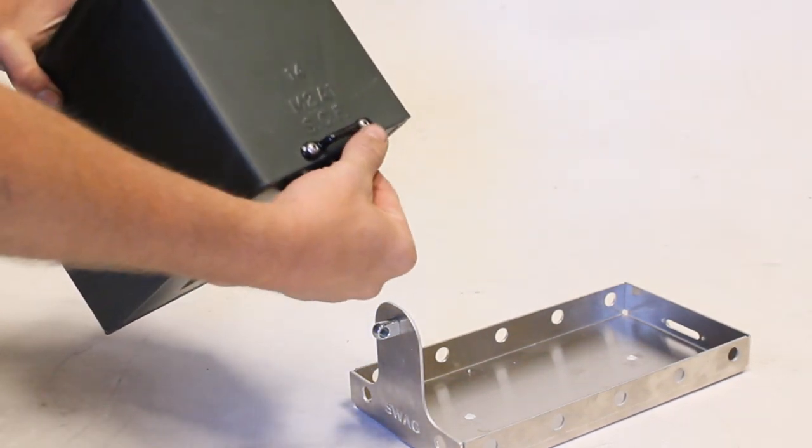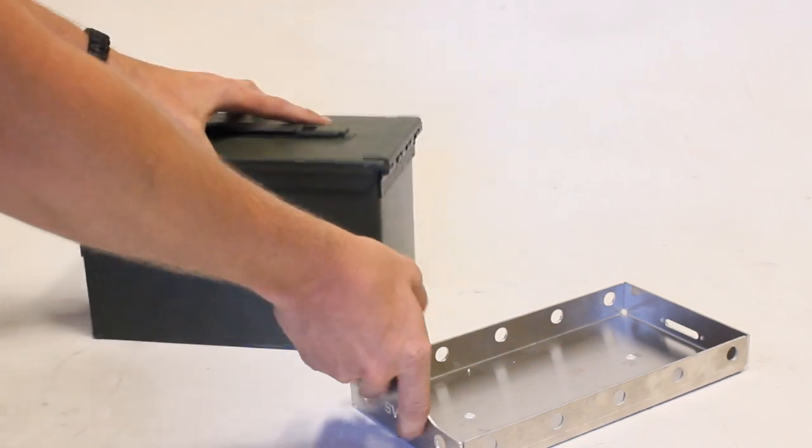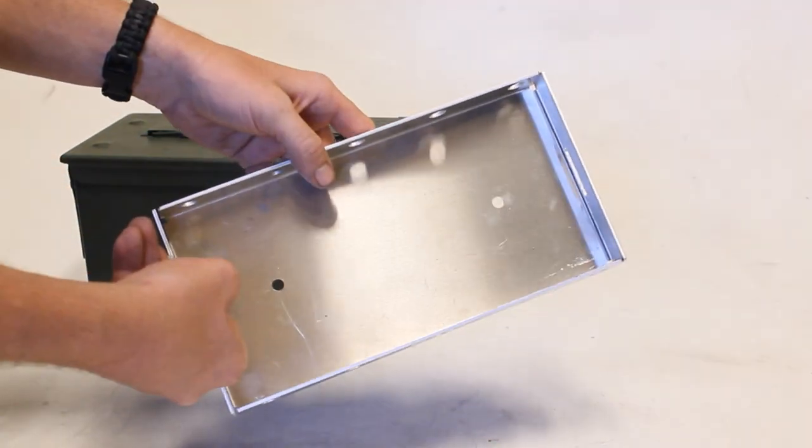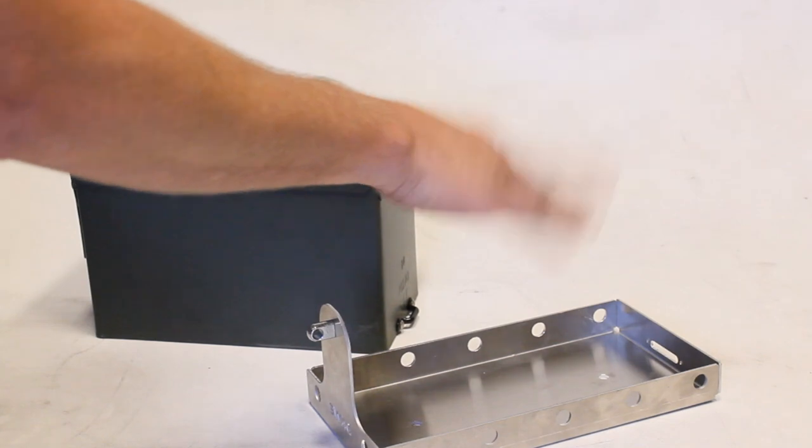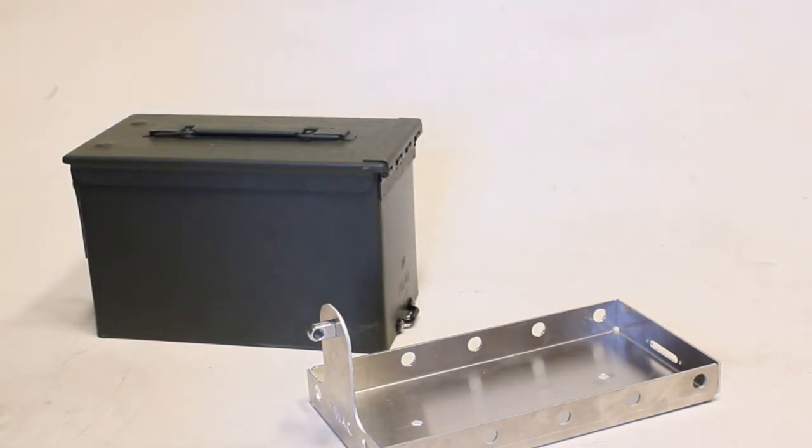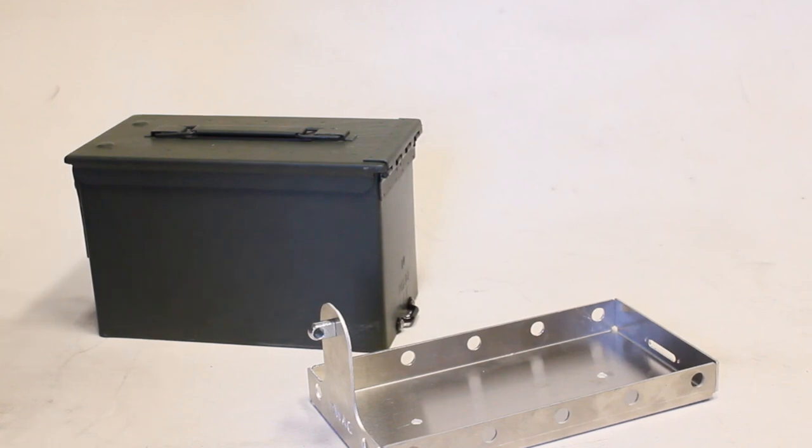On the back of the can here, we have this footman loop, and the footman loop gets inserted in the back side of the aluminum mount, and that prevents the can from lifting up or rattling when off-road or on washboard gravel roads.